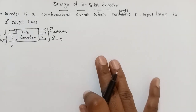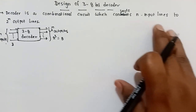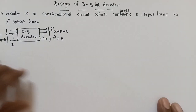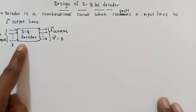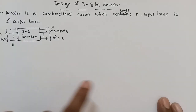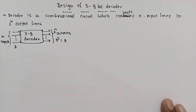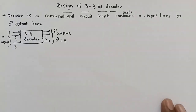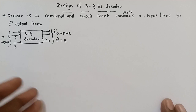First, I have a decoder definition. A decoder is a combinational circuit which converts N input lines to 2 power N output lines. We have N input lines to convert to 2 power N output lines — we have a decoder. In this example, we have a 3 to 8 decoder.